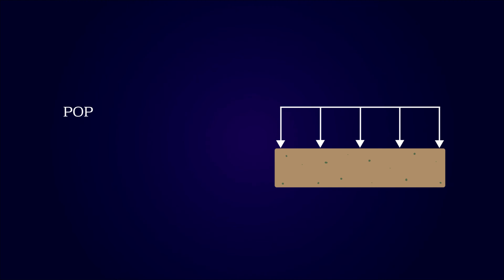If the pre-overburden pressure is equal to 100 kN per square meter, a load of approximately 10 tons per square meter can be applied before the stiffer overconsolidated behavior is exchanged by a less stiff normally consolidated behavior.